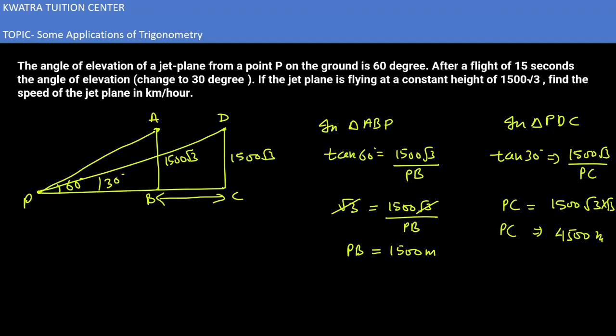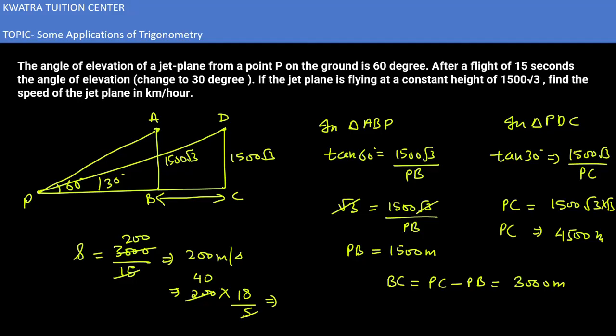And PB value also, if I take BC to remove both values, then what will happen? PC minus PB is 3000 meter. If you take the speed, then how will it be? 3000 over 15 because time is given, 15 seconds. So it would be 200 meter per second. If you take the speed, you have to multiply it with 18 over 5, so this will give you 40. And 40 into 18, 18 into 4 is 72. So 720 km per hour.